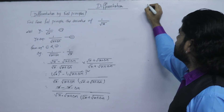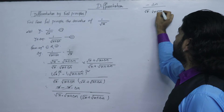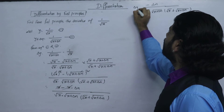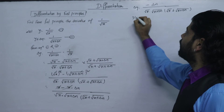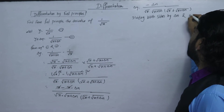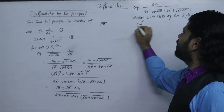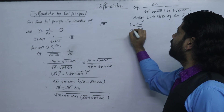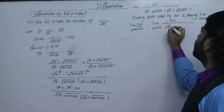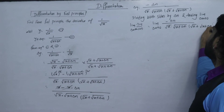After canceling delta x, as delta x approaches zero, x plus delta x tends to x. The expression simplifies, giving us the derivative as minus 1 upon 2 x root under x.